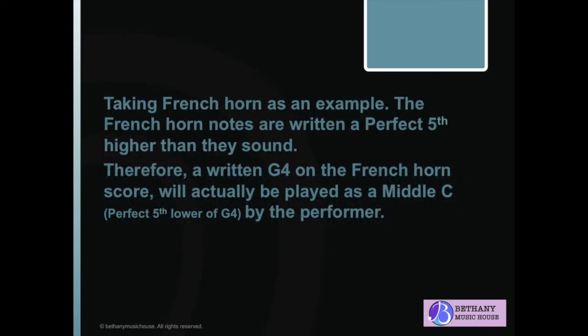Taking French horn as an example, the French horn notes are written a perfect fifth higher than they sound. Therefore, a written G4 on the French horn score will actually be played as middle C, a perfect fifth lower than G4, by the performer.